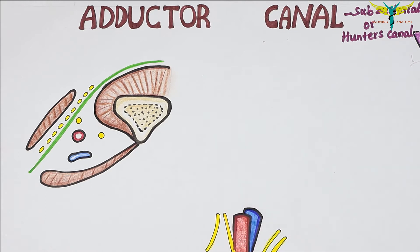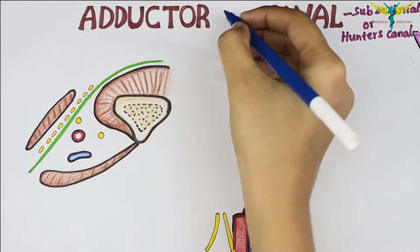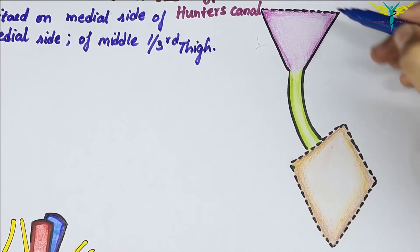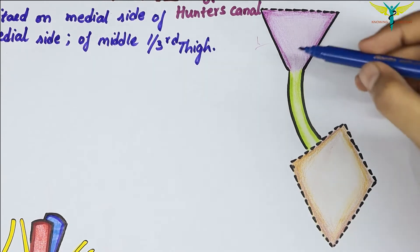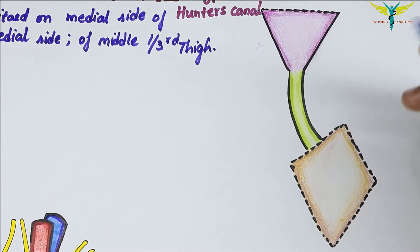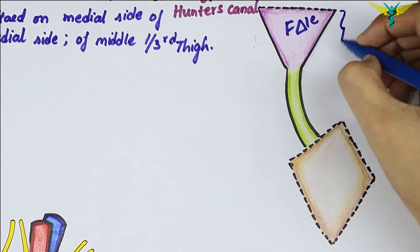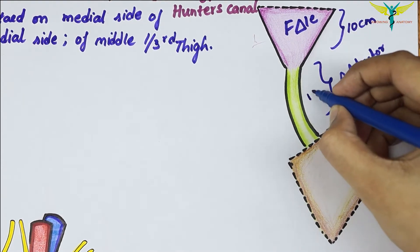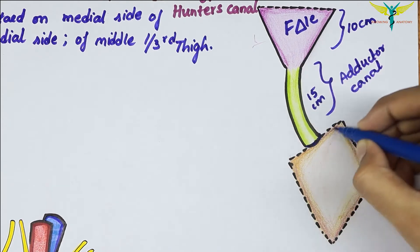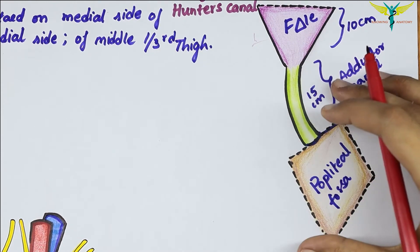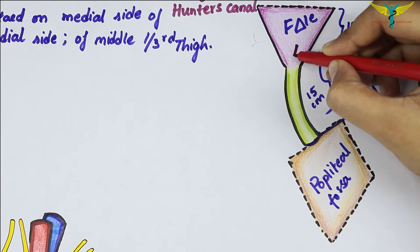The adductor canal is a long intramuscular canal or tunnel situated on the medial side of the thigh, in the middle one-third of the thigh. It is about 15 centimeters long, extending from the apex of the femoral triangle above to the tendinous opening of the adductor magnus — the adductor hiatus — below. The femoral triangle is approximately 10 centimeters long.